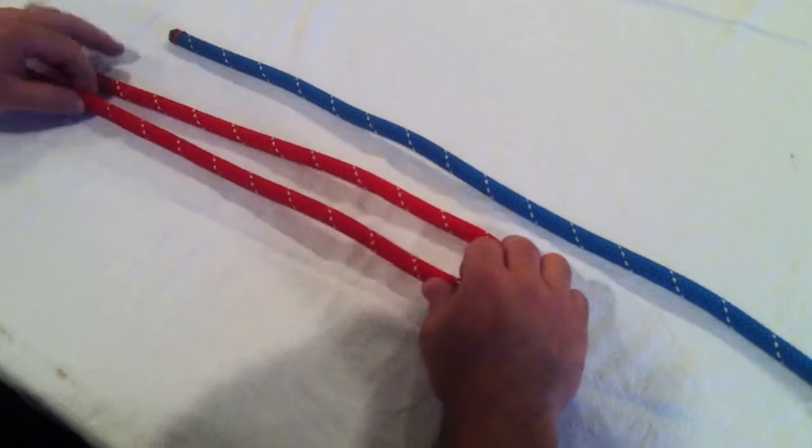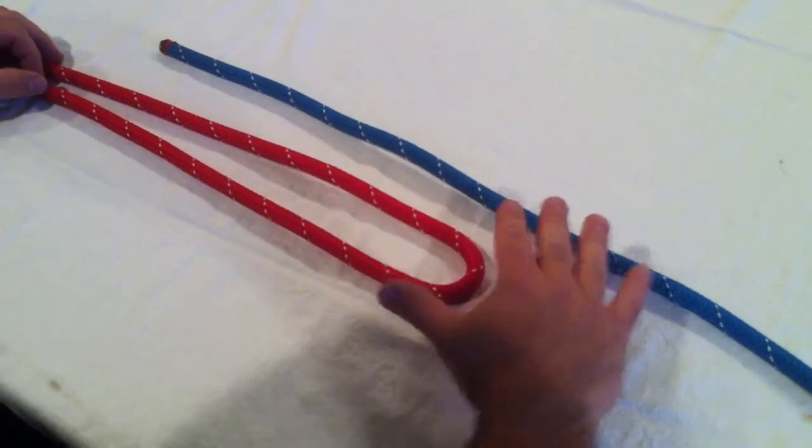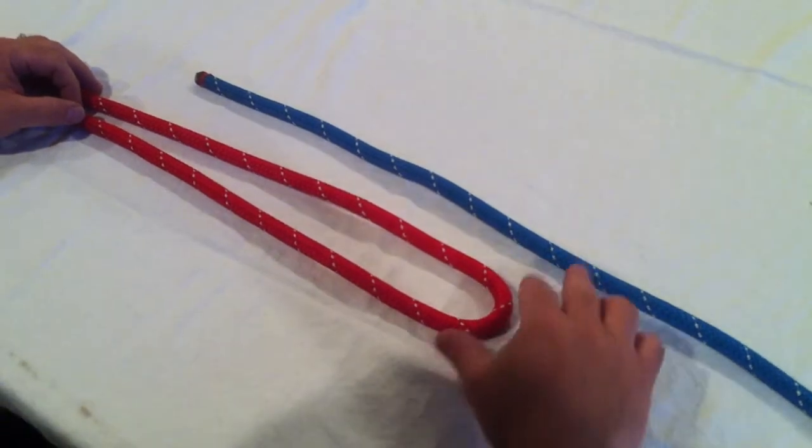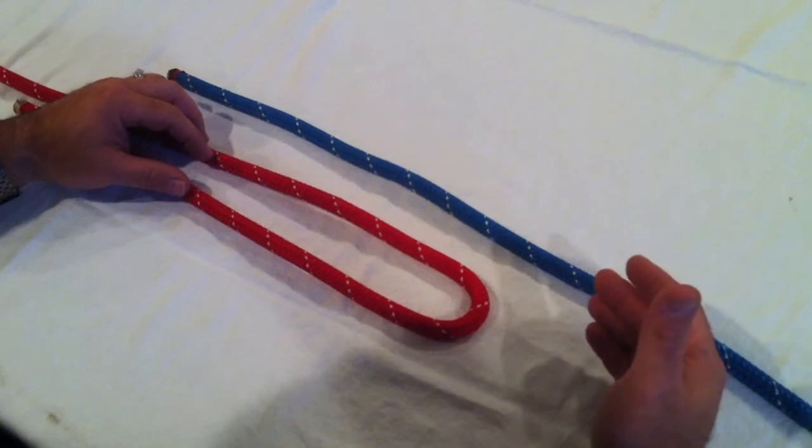I'm going to tie this with two different color ropes that'll help you visualize what's going on here. This can be tied with two ropes of equal diameter like we have here. We've got the half inch static kern mantle rope or it could actually be done with two ropes of unequal diameter as well.